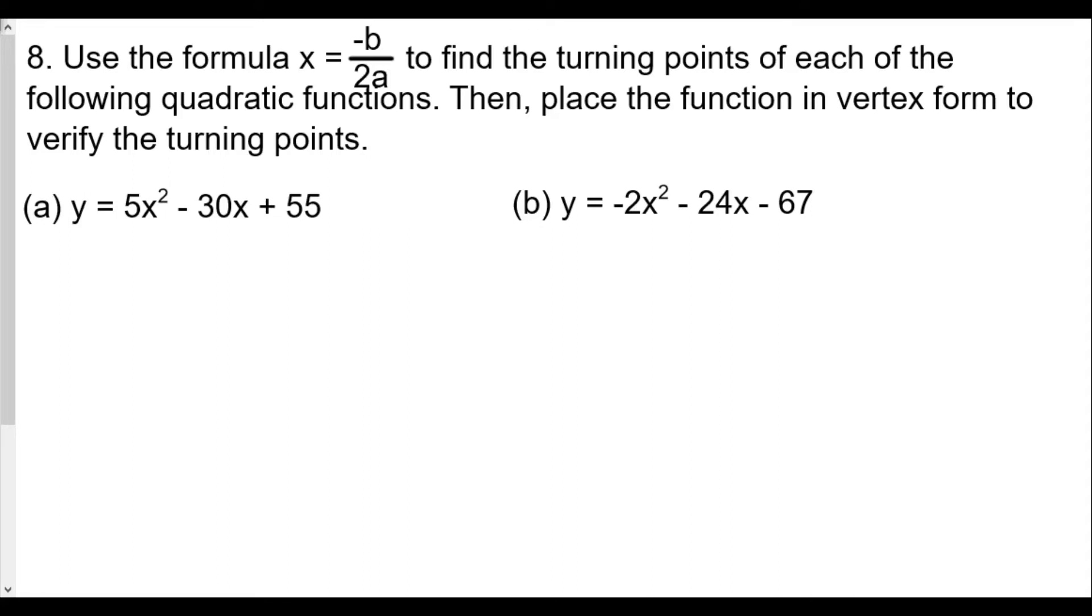Welcome back. This is our Algebra 2 Quadratic Functions Lesson 8: Shifting Parabolas by Completing the Square, Home Review Part 3. Please make sure to catch parts 1 and 2, especially part 1 where we go over the rules to complete the square and how to change a quadratic function from standard form into vertex form. The question says use the formula x equals negative b over 2a to find the turning points of each of the following quadratic functions, then place the function in vertex form to verify the turning points.